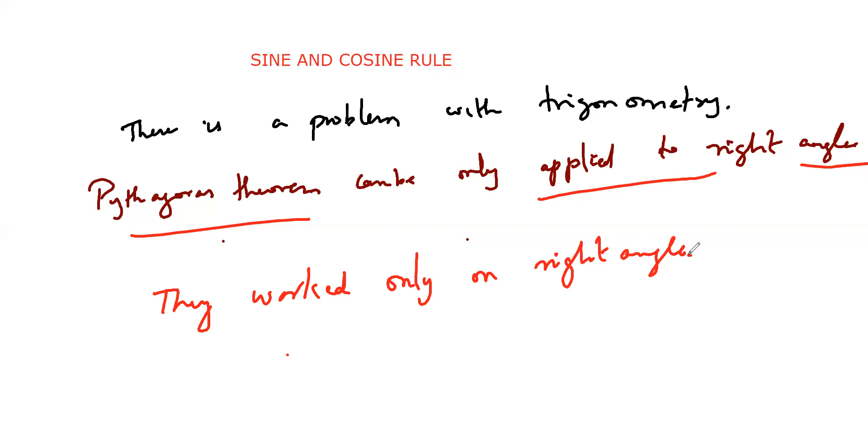For this purpose, we brought a new rule called Sine and cosine rule to overcome this drawback. So now I will teach you when we should use Sine rule, when you should use the cosine rule respectively. First, let us take the Sine rule.